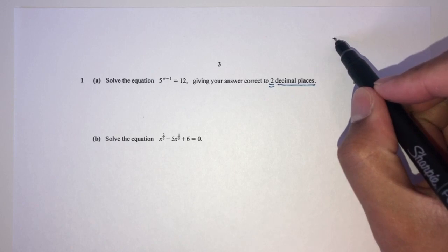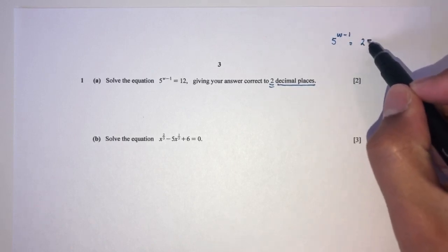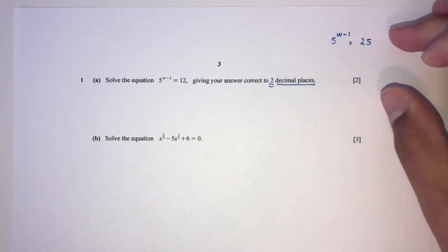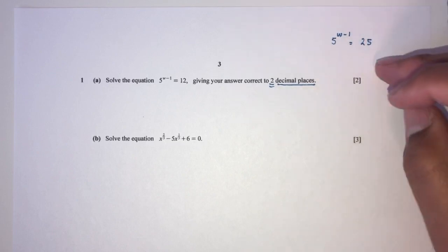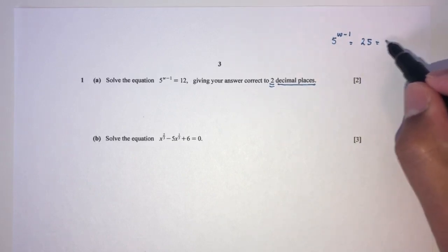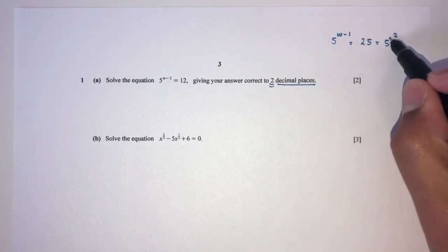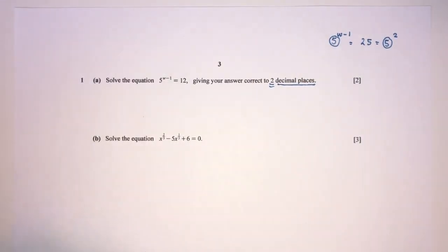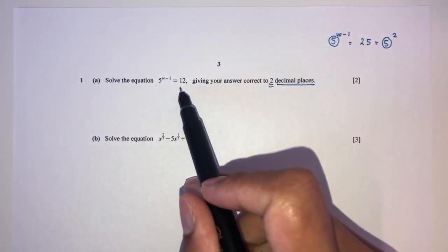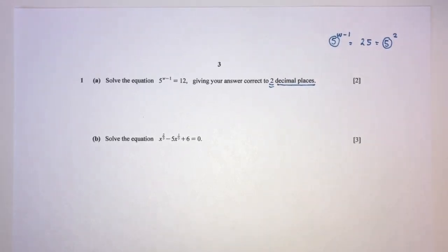Usually, let's say we had 5 to the power of w minus 1 equal to 25. In that case it would be different, because 25 is 5 to the power 2, so we'd convert to the same base. But in this case we have 12, which is nothing in terms of a power of 5, so we have to go with the logarithm option.